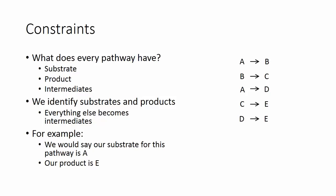But we have some constraints here. And the constraints are born out of asking ourselves, what does every pathway have? Every pathway has a substrate. We start somewhere. Every pathway has a product. We've got to end somewhere. And every pathway is going to have intermediates that will allow us to get from substrate to product. We form intermediates on the way. We can identify substrates and products because usually a substrate is what we want the cells to grow on. The products are what we want the cells to make. Everything else becomes intermediates.